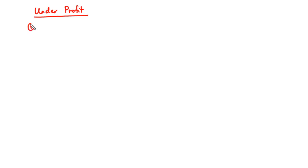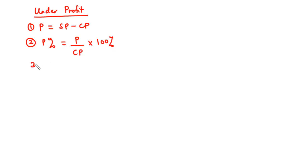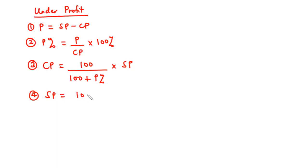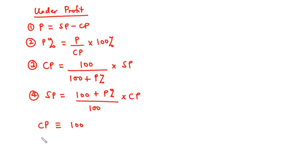Under profit: (1) Profit = Selling price − Cost price. (2) Profit% = (Profit / Cost price) × 100%. (3) Cost price = (100 / (100 + Profit%)) × Selling price. (4) Selling price = ((100 + Profit%) / 100) × Cost price. You don't need to memorize all these formulas — just remember that under profit, cost price is equivalent to 100 and selling price is equivalent to 100 plus the profit percent.